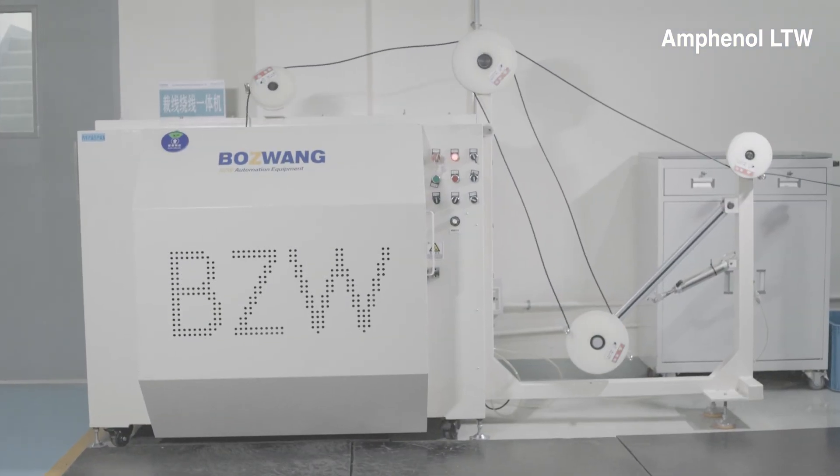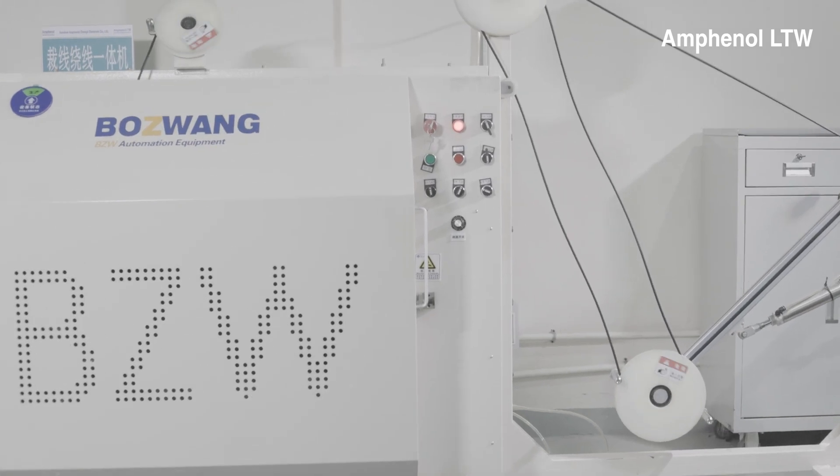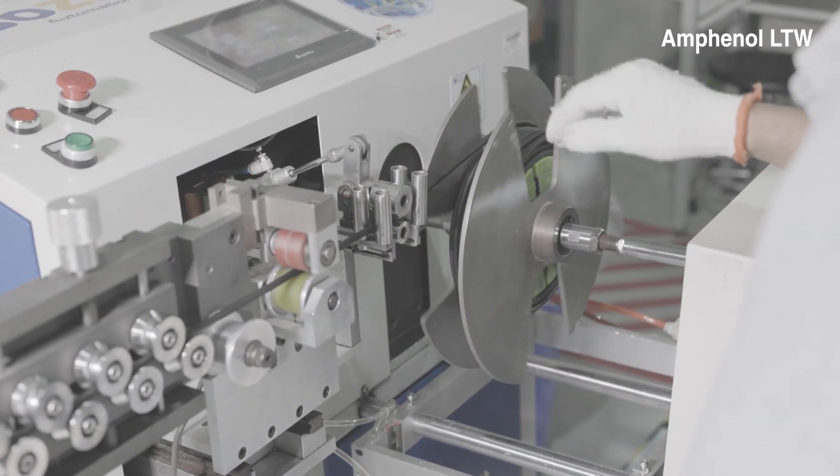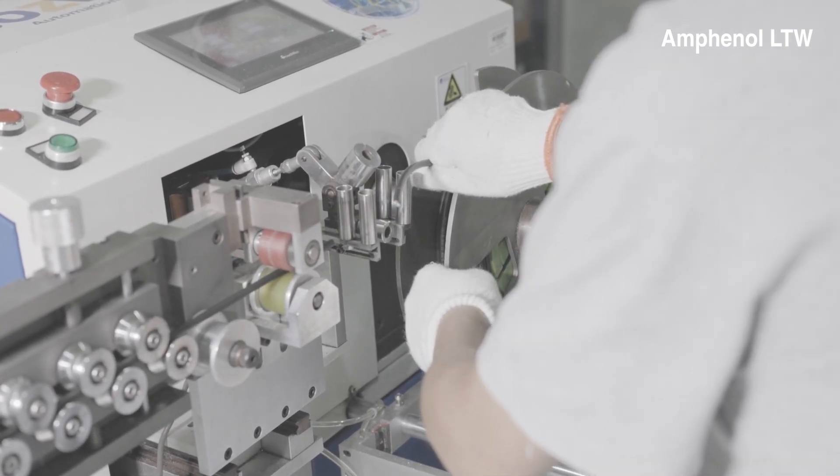The cable cutting and coiling machine is capable of simultaneously performing cutting and winding functions. This enhances production efficiency and streamlines the manufacturing process.